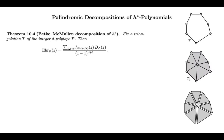So here's a reminder. This is the Bruns-McMullen theorem from the previous video. We're fixing a triangulation, and then the h-star polynomial can be written as a sum over the simplices in this triangulation. The summands involve the h-polynomials of the links and the box polynomials.